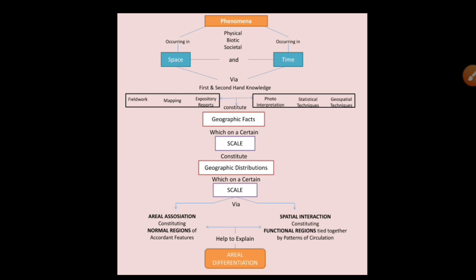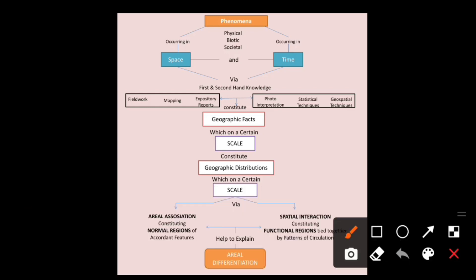This is the whole chart which you can find in the book The Art and Science of Geography. The book can be accessed through e-commerce websites like Flipkart, Amazon, etc. Basically, this chart teaches what geography is about. Starting from the uppermost part: Phenomena — which is physical, biotic, or societal.